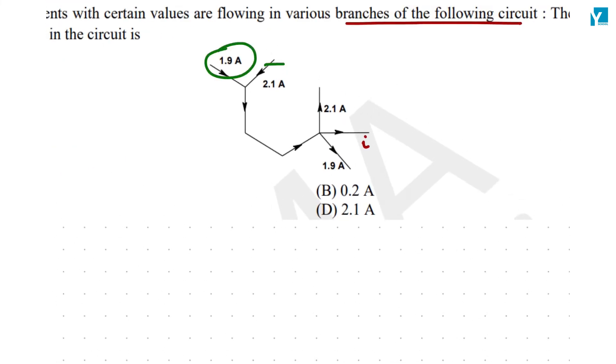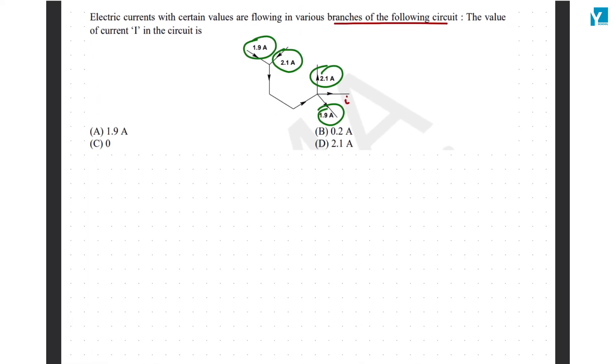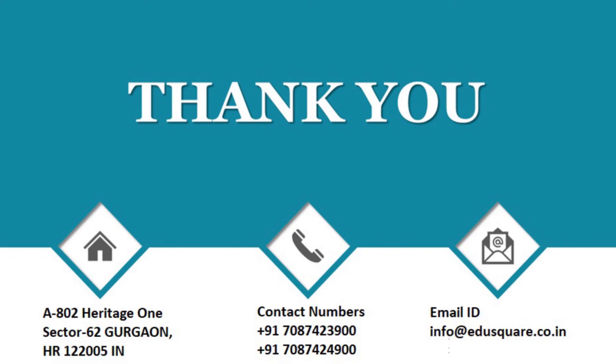We know that 1.9 and 2.1 enter, and 1.9 and 2.1 exit, so i must be zero. That is going to be your answer.